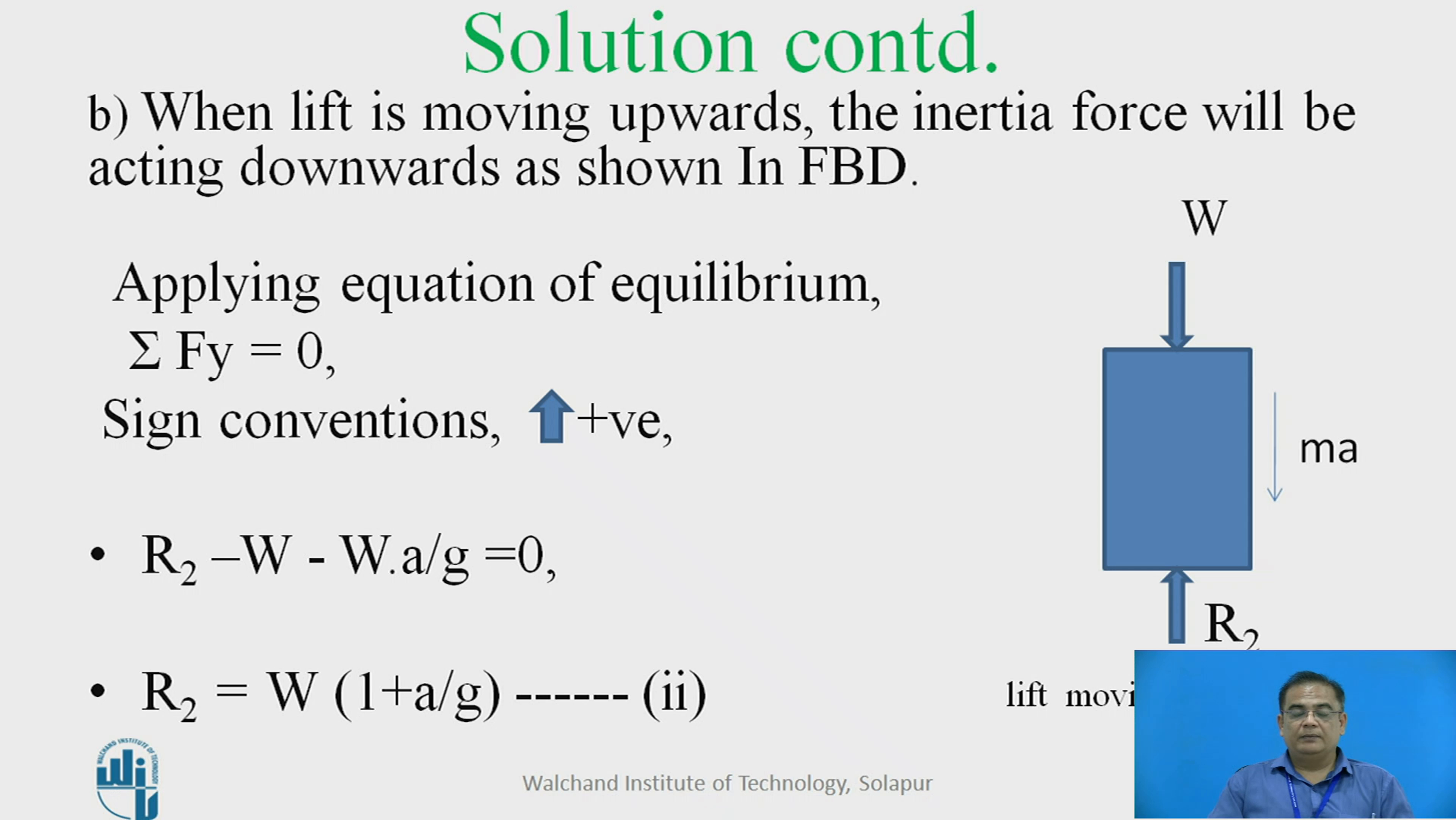Applying equations of equilibrium. Sigma Fy equal to 0. Our sign conventions upward forces positive. Let this reaction be R2. So, R2 minus W minus Wa upon g is equal to 0 will be the equation. R2 is equal to W into bracket 1 plus a upon g. Let this be equation 2.